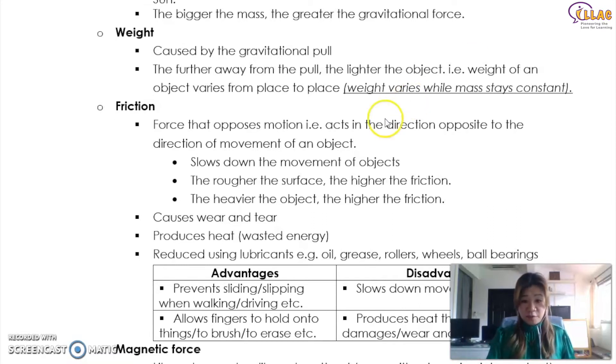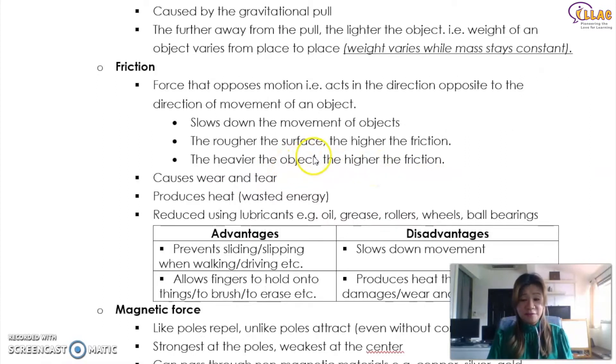So what is friction? Friction actually slows down the movement of objects and the rougher the surface, the higher the friction. So if compared to a sandpaper and a place that is smooth or a glass, for example, the ball on the glass can roll faster than the ball on sandpaper because sandpaper is very, very rough. So the heavier the object, the higher the friction as well. So compared to you pushing your own table across the room versus pushing a cabinet across the room, the friction behavior for the cabinet versus the table.